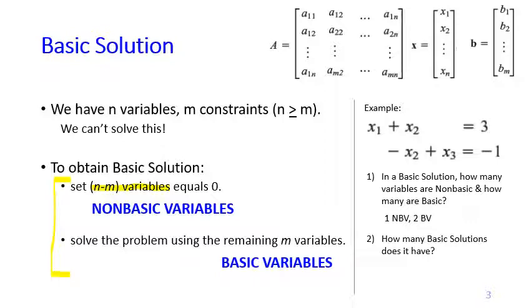This gives us three possibilities for basic solutions, because we can set x1 as zero, x2 as zero, or x3 as zero. For each option we get one basic solution, so we end up with three distinct basic solutions from this example.